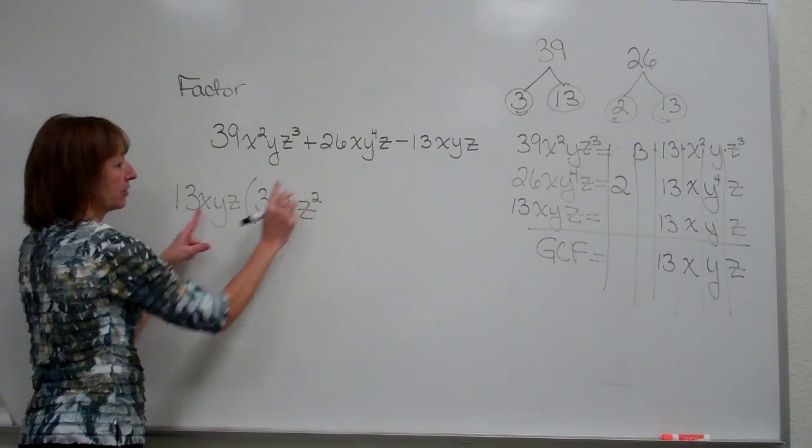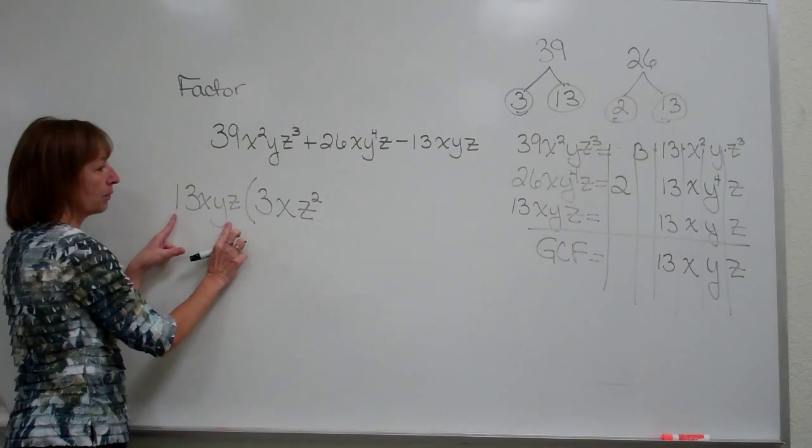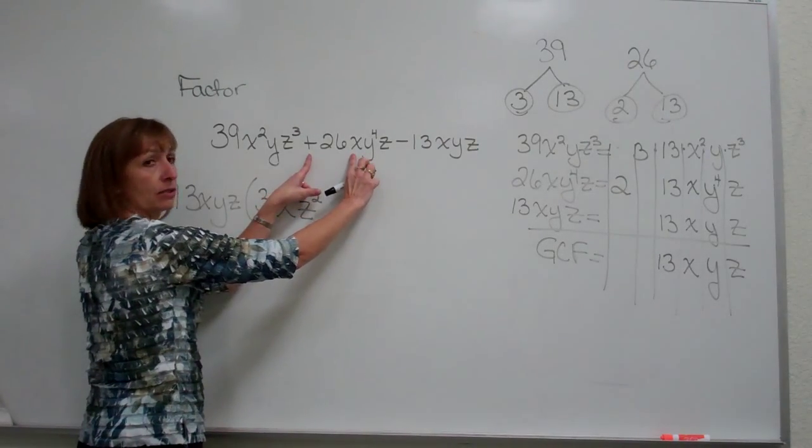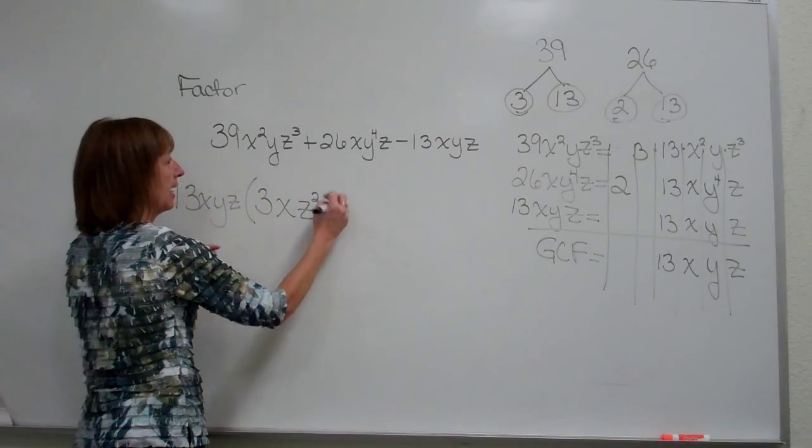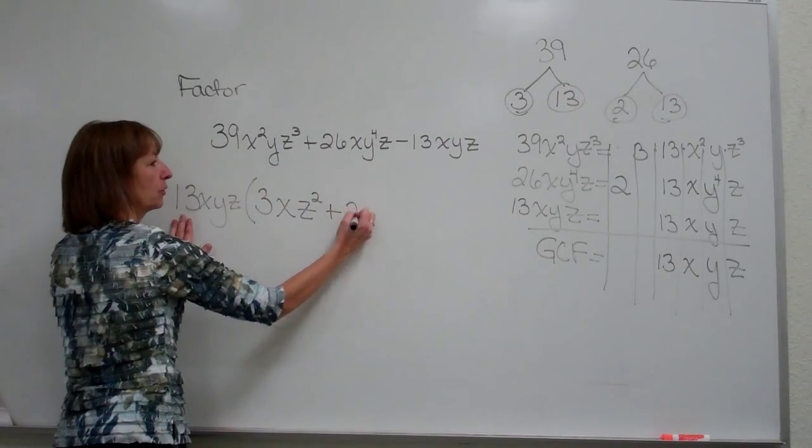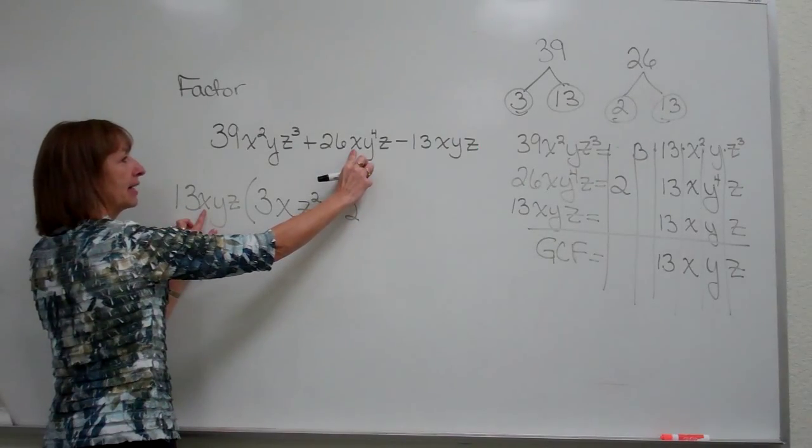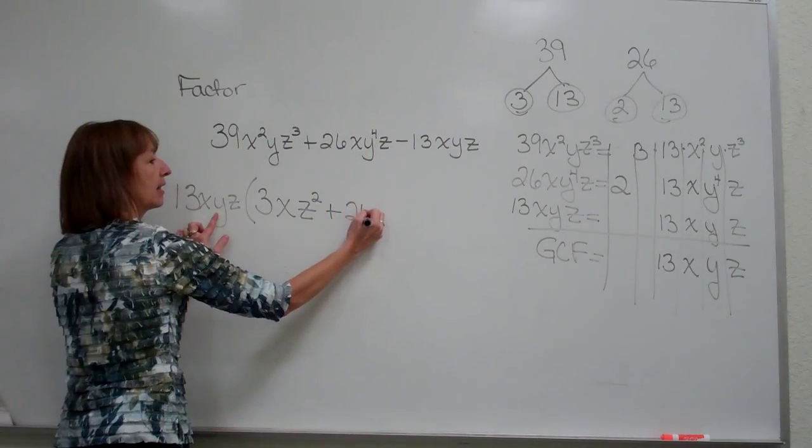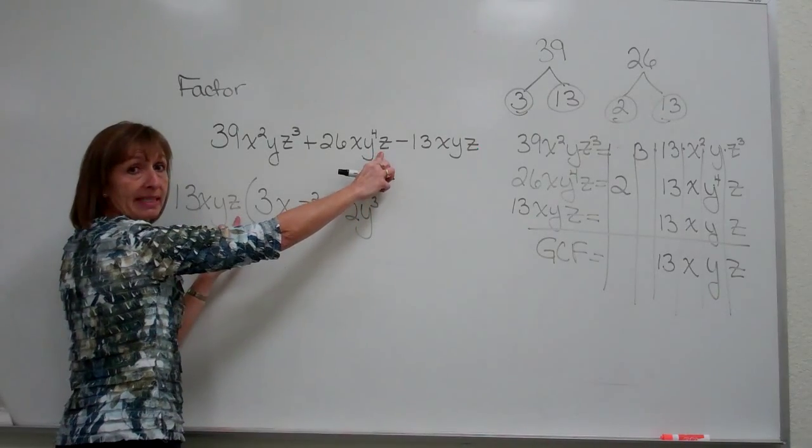Now we're going to go to the next term. Divide 13xyz into 26xy⁴z, and I get positive 26 divided by 13 is plus 2. I divided out my x. For the y's, I'll have y³, and then I divided out my z.